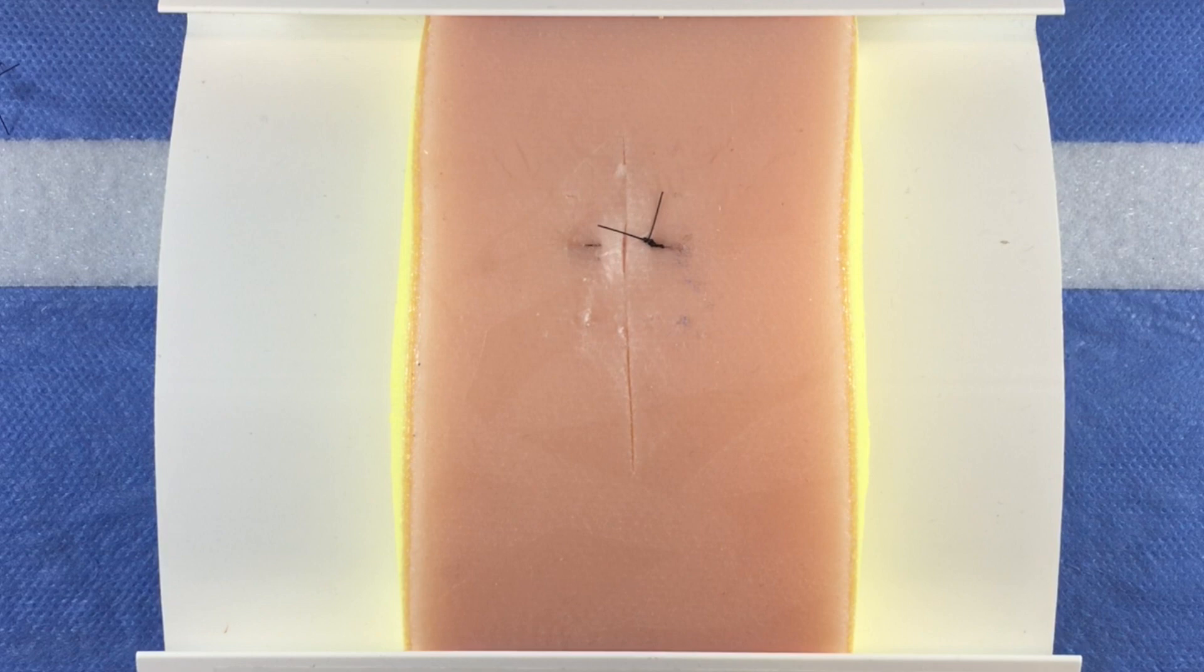A vertical mattress suture is one where there is both a deep and superficial layer placed in a vertical fashion. This is a suture technique that is ideal for deep wounds as it results in a multi-layer closure.